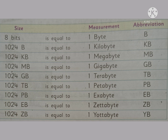1024 exabytes is equal to 1 zettabyte, ZB. And 1024 zettabytes is equal to 1 yottabyte.